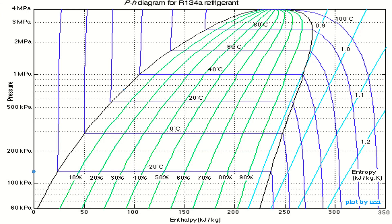First, we have to plot all the given data on pH diagram in order to find out the enthalpies at all four states. Point 1 is at 1.4 bar and -10°C. 1.4 bar means 140 kilopascal. Point 1 will be at 140 kilopascal and temperature is -10°C which is between 0 and -20. This is our Point 1.